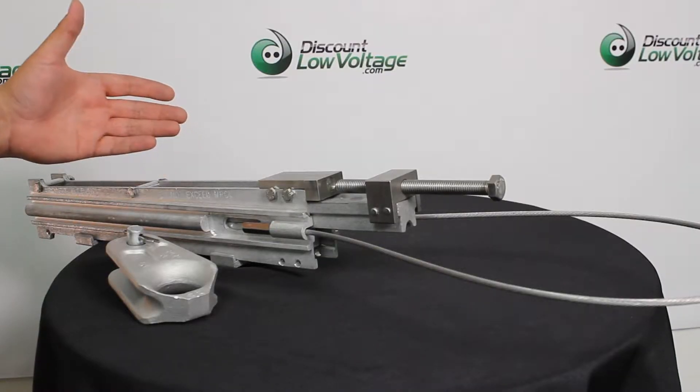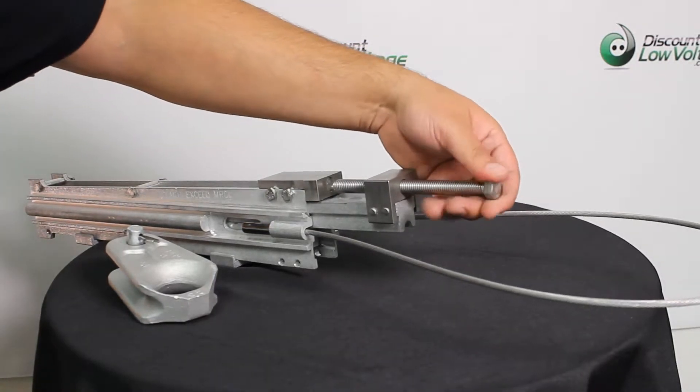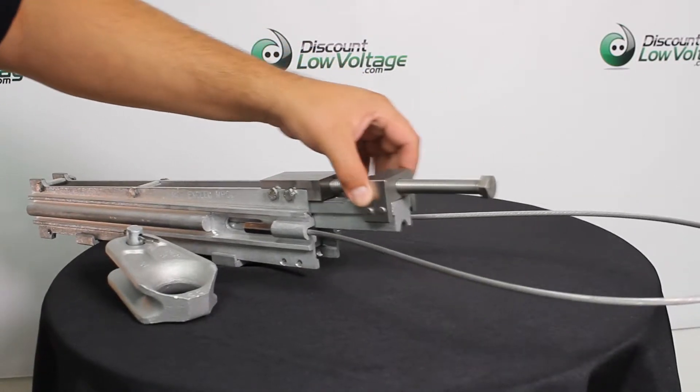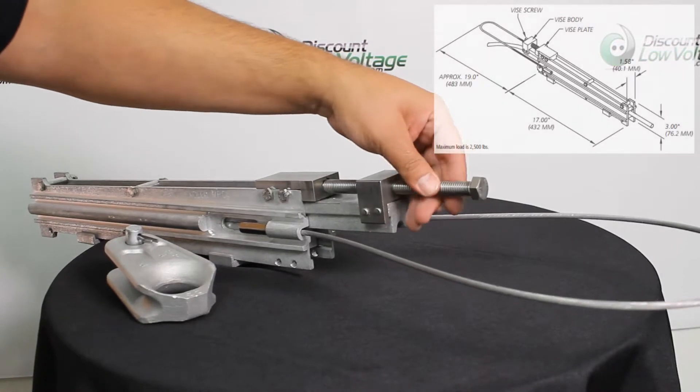Okay, so this is your temporary grip. Now you have your vise screw right here in the front, you have your vise body.